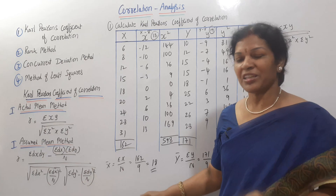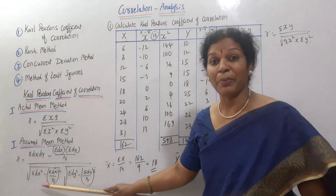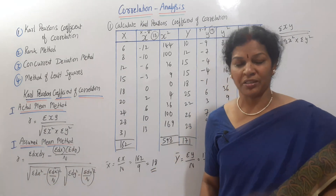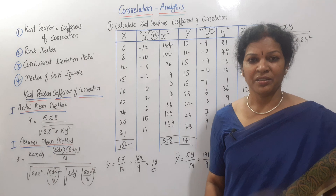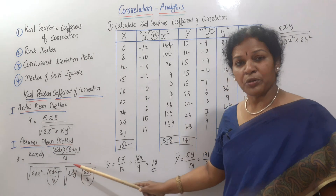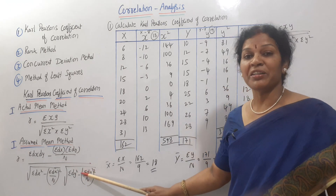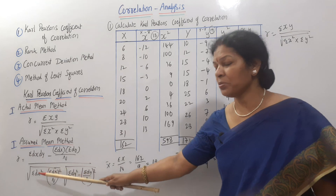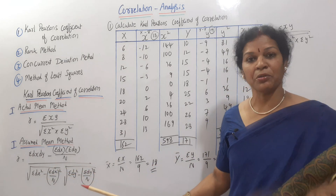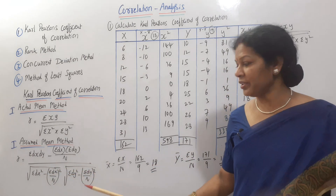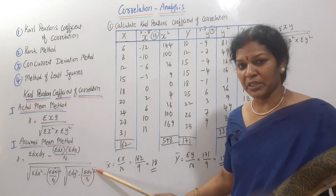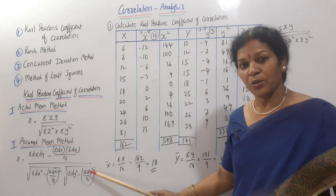In our standard deviation, we have sigma dx squared by n, but here it is different. The denominator is the root of sigma dy squared minus sigma dy by n whole squared. If it is dx squared, then correspondingly it is dy squared. There is no standalone standard deviation here.